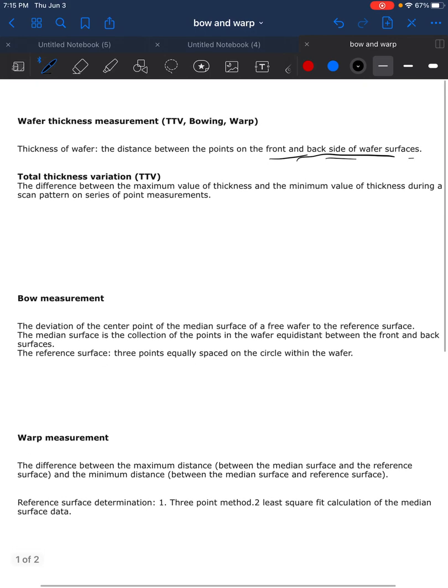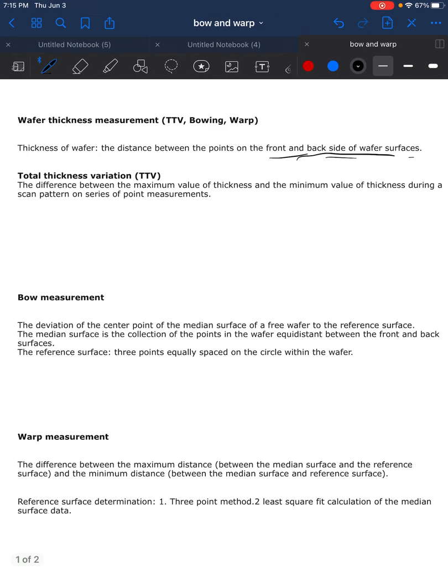The second concept is called TTV, total thickness variation. Basically you can use this parameter to evaluate the thickness variation throughout the whole wafer. The definition is the difference between the maximum value of the thickness and the minimum value of the thickness during a scan pattern on a series of data collection or point measurements.